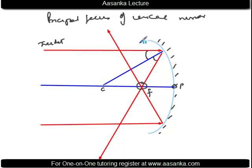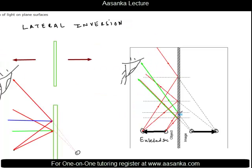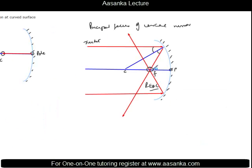Interestingly, the rays are actually meeting in this case, so such rays can be captured on a screen — therefore this situation is called formation of a real image. In contrast, in plane mirror reflection, rays only appeared to be coming from behind the mirror; there was no actual ray there. Because of reflection, we felt they were coming from that side — we cannot capture that image on a screen, so it is a virtual image. Here, it is a real image of an object at infinity formed at the focus.